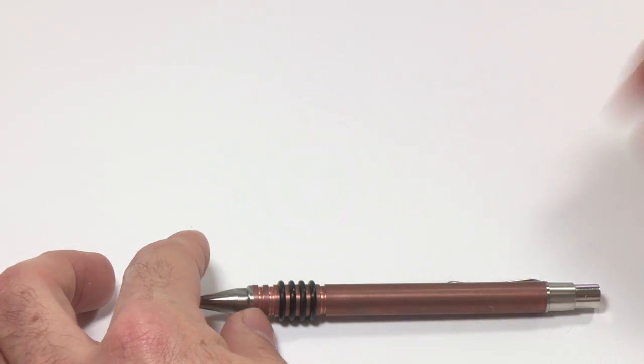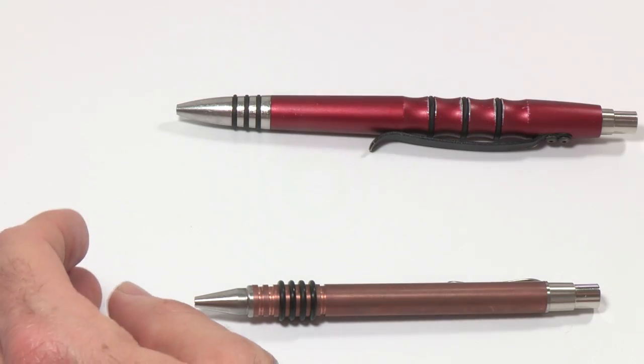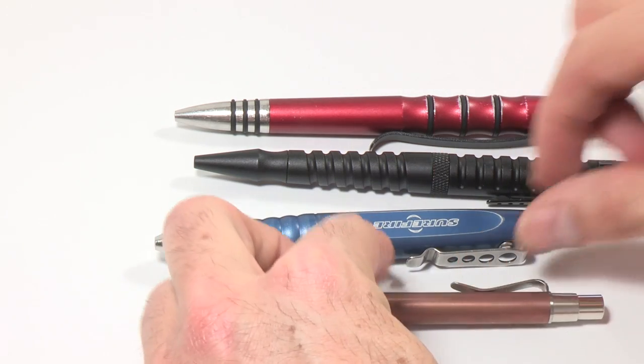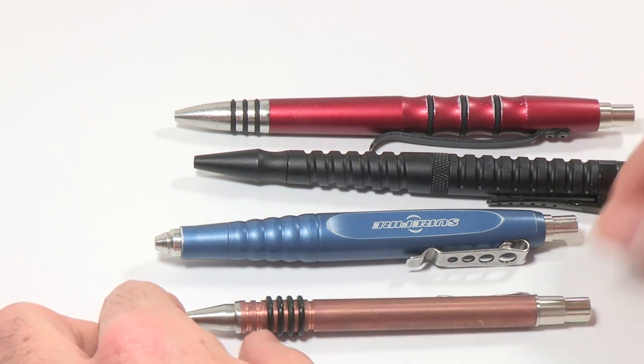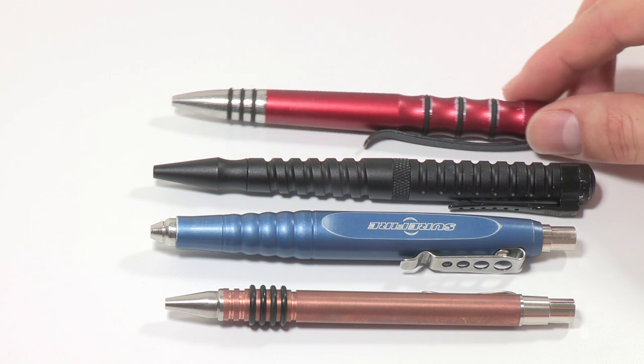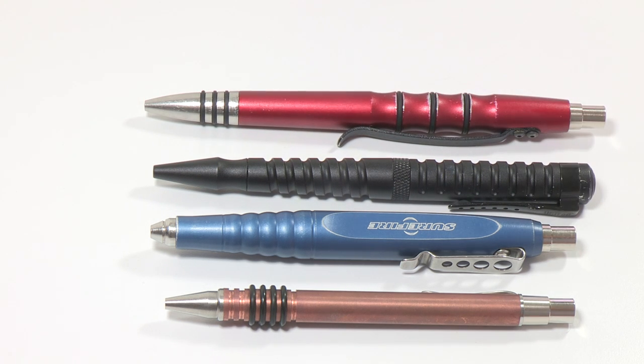But here's the pen, just for a quick size comparison to some of my other pens. Tough Rider Precision Press pen, United Cutlery pen, and my Surefire pen. So I was actually surprised at how small this pen was. I kind of pictured it being a little bit bigger, a little bit longer, but it's definitely a smaller pen.